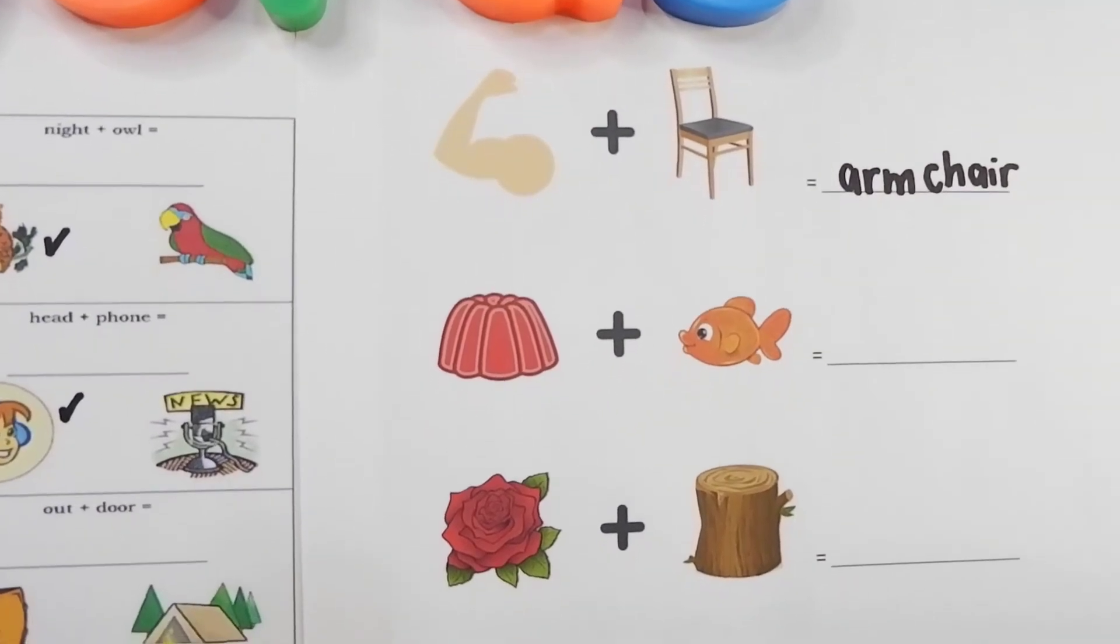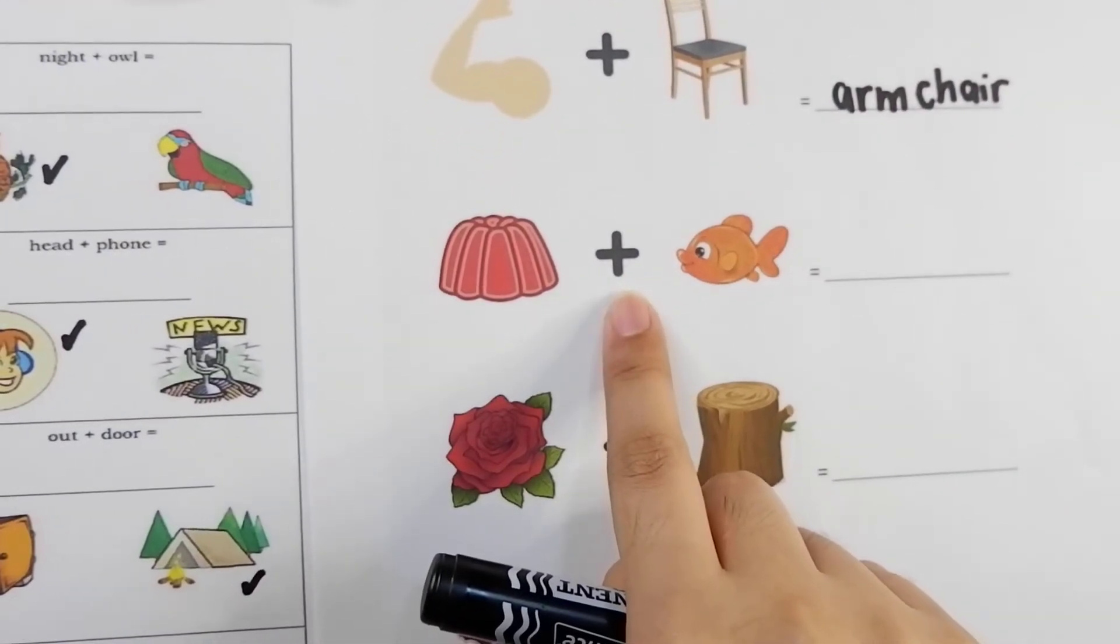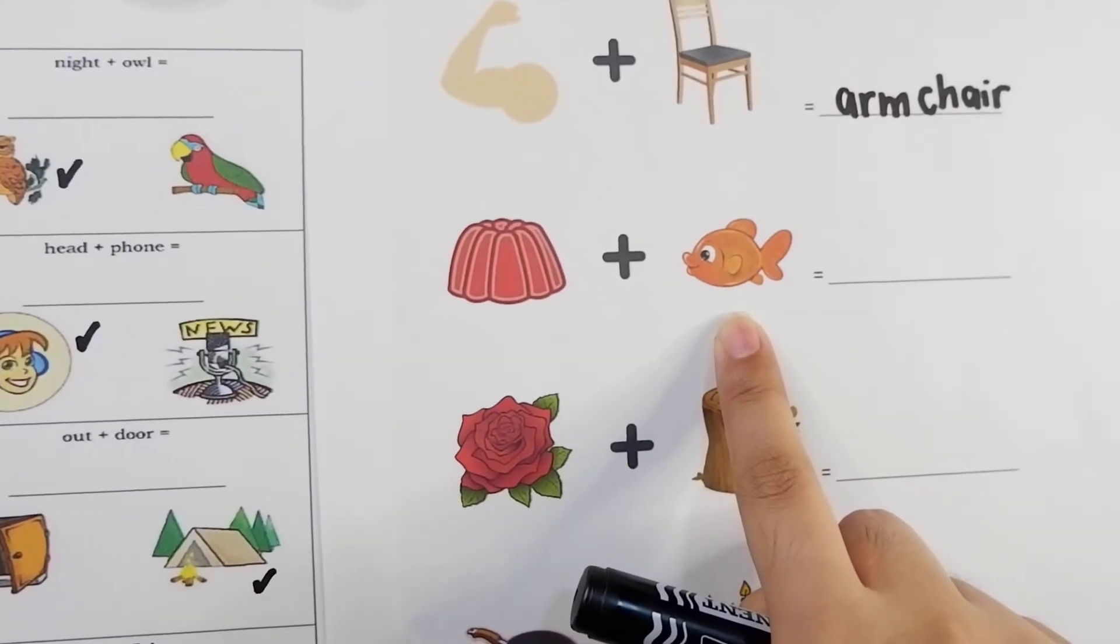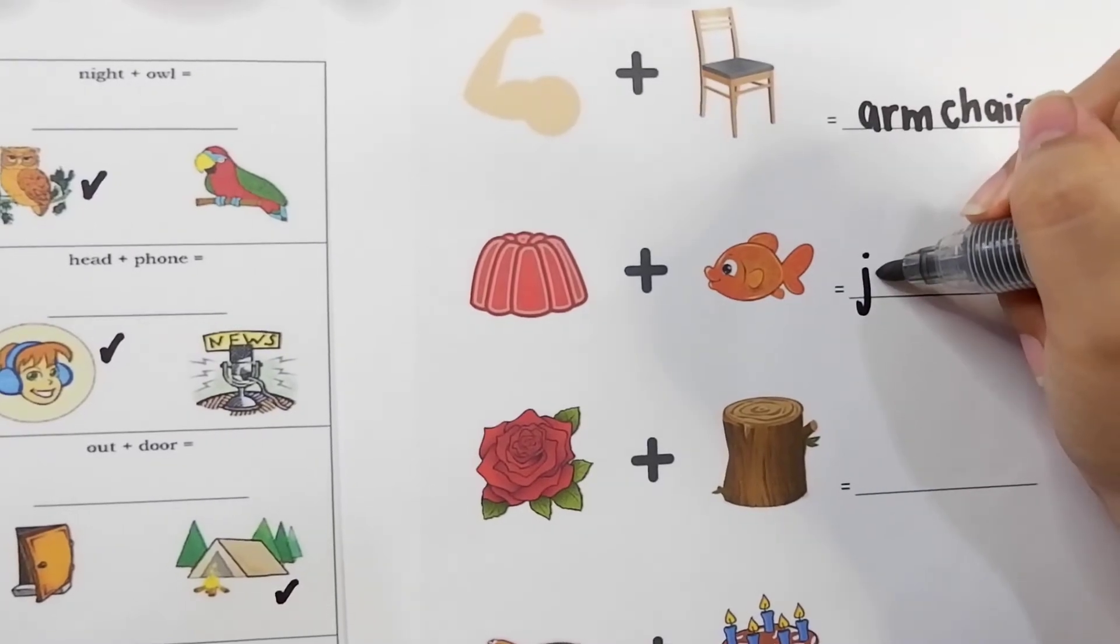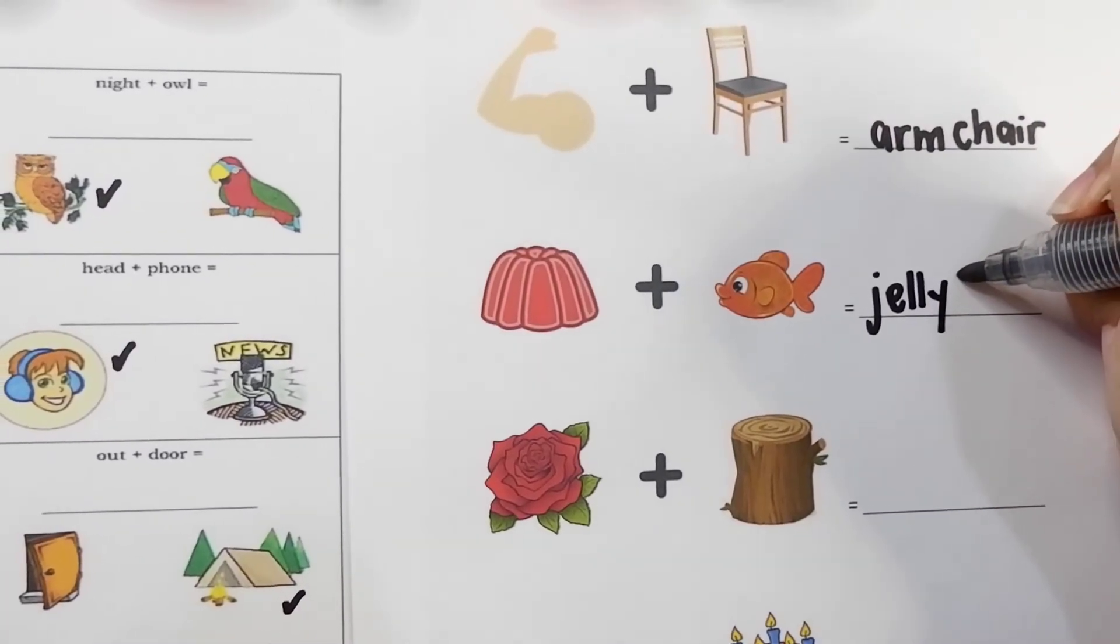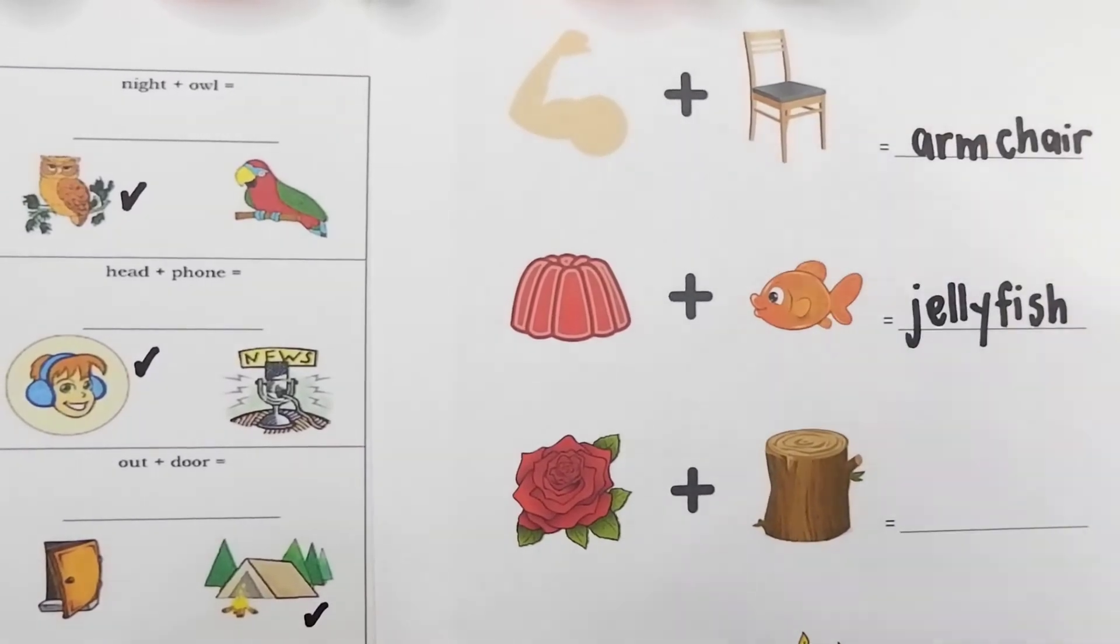Next example chameleons. We have jelly plus fish. Can you put them together? If you said jellyfish, then you are correct.